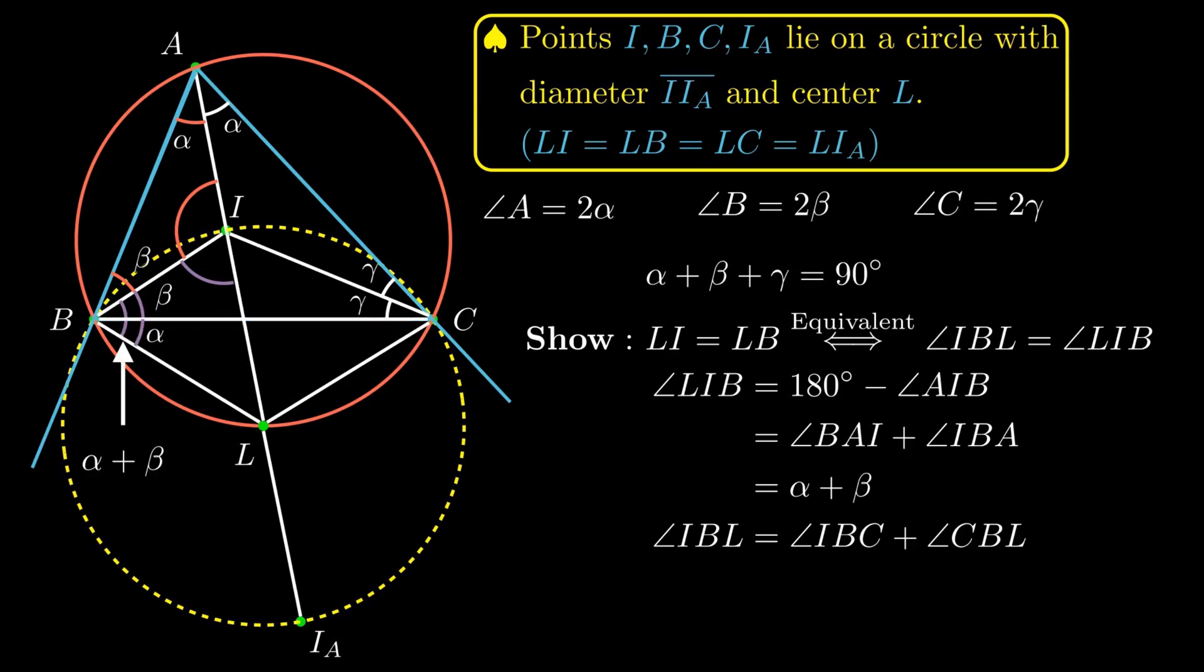This implies that angle IBL equals β + α, as angle IBC equals β and angle CAL equals α. Therefore, this proves that angle IBL equals angle LIB, so LI equals LB.